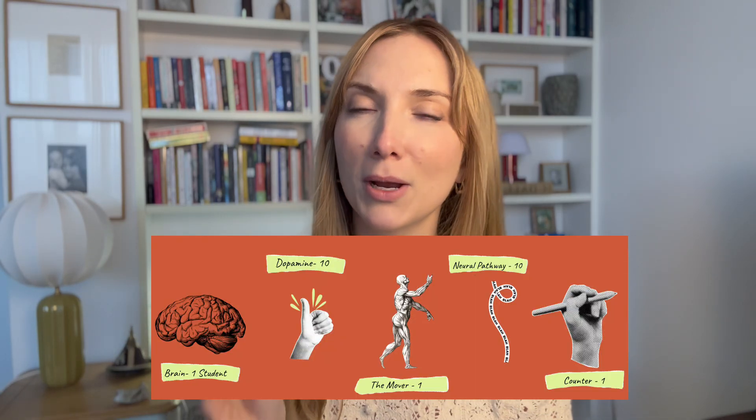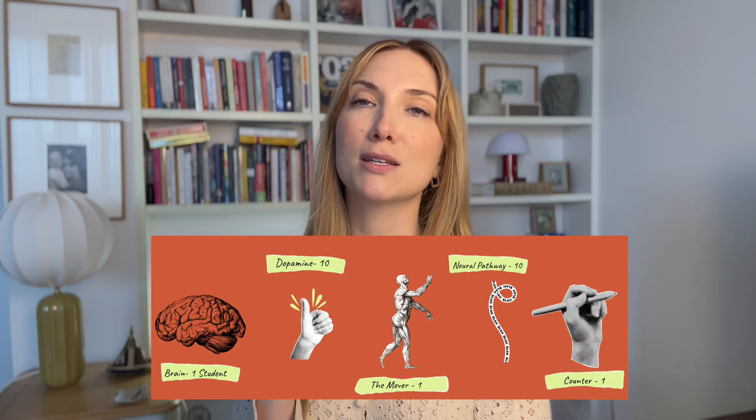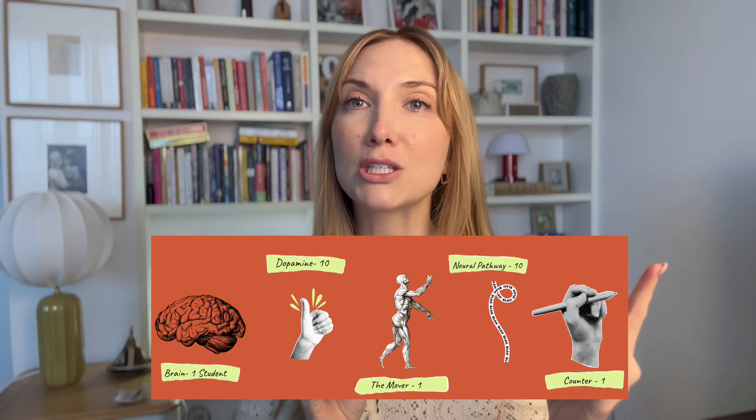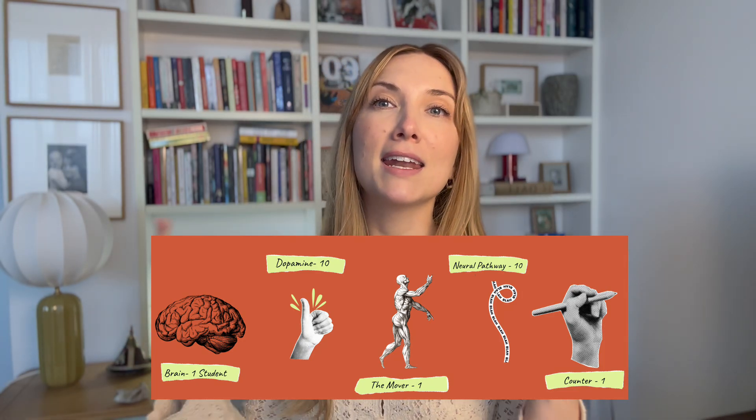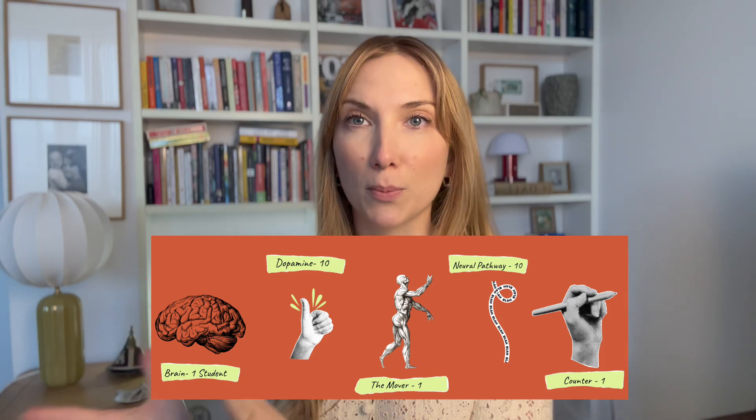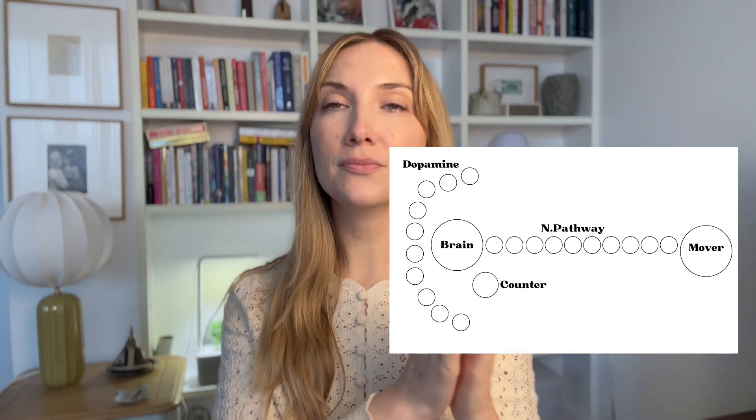You're going to start this simulation by showing what a normal, healthy, habit-forming process would look like in the brain. You're going to assign one student to be the brain, 10 students to be the neural pathway, one student to be a mover, and another 10 students to be the dopamine. Here is a little diagram of how you will set them up in your room. The brain has a message it needs to send to the body — the mover — and it's going to use the neural pathway to get that message over.